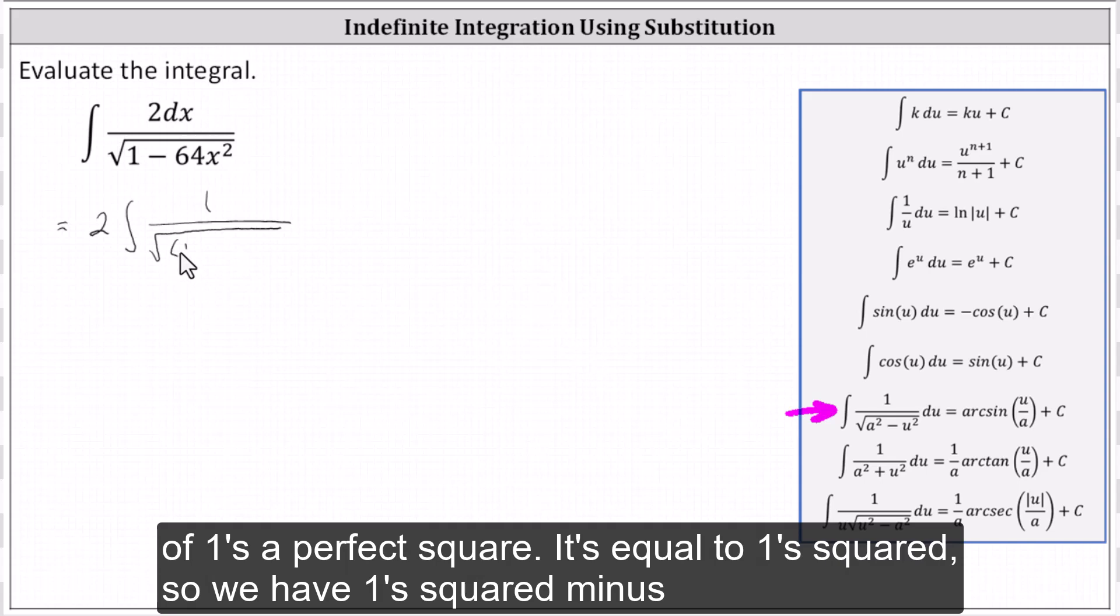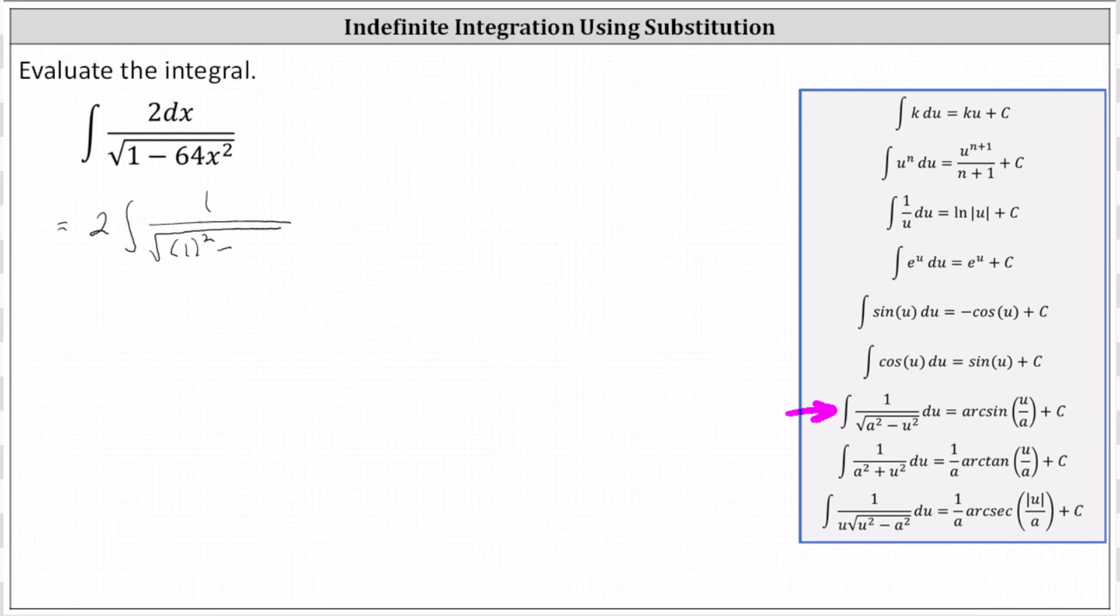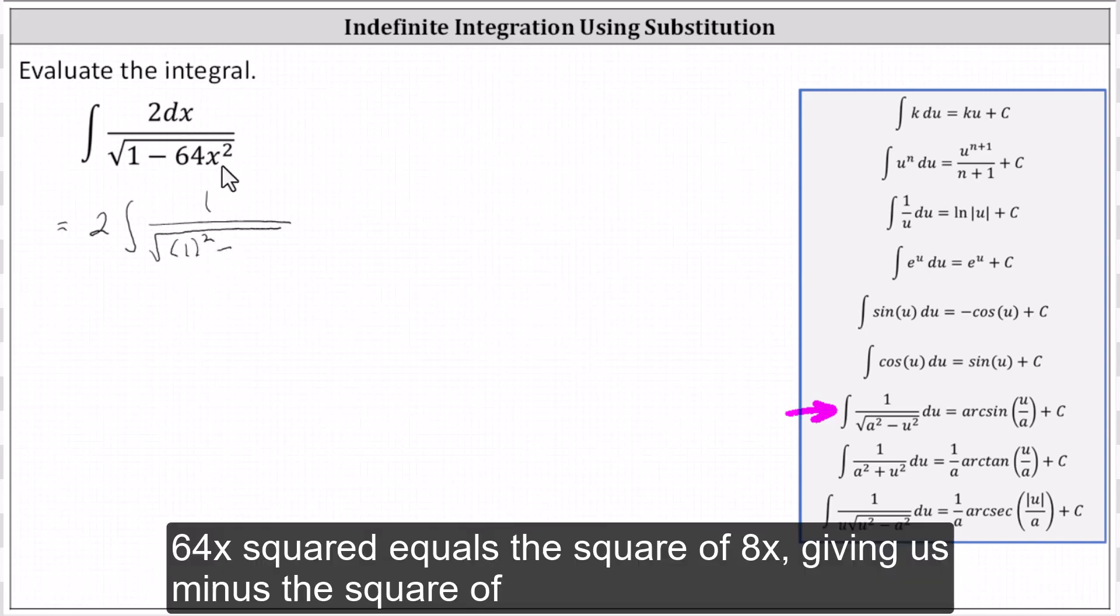it's equal to one squared, so we have one squared minus 64x squared equals the square of eight x, giving us minus the square of eight x dx.